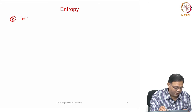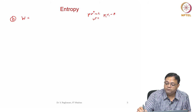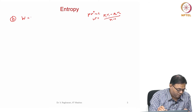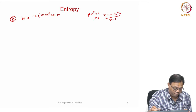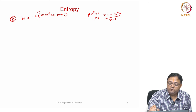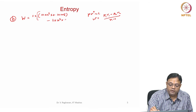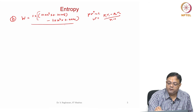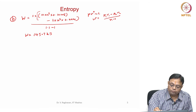Now Part B — work and heat interaction. For PV^n = constant, the work interaction equals (P1·V1 − P2·V2)/(n−1). With mass 1 kg: P1 is 10×10^5, V1 is 0.10705; P2 is 2×10^5, V2 is 0.4625; n is 1.1. This gives work equal to 145.7 kilojoules.